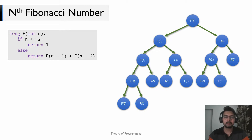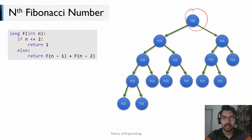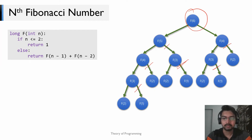Now let's look at this from another perspective. To compute F(6), F(6) calls F(5) and F(4); F(5) calls F(4) and F(3), and so on. If you look at this recursion tree closely, you'll notice that F(3) is actually called three times, and F(4) is called two times.